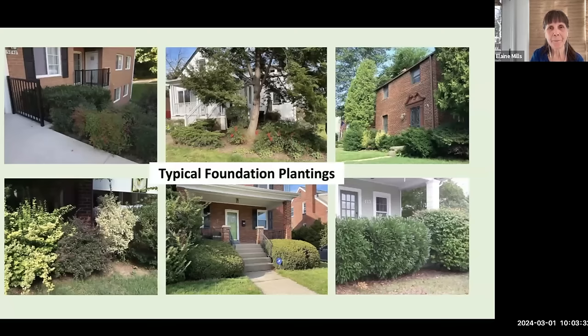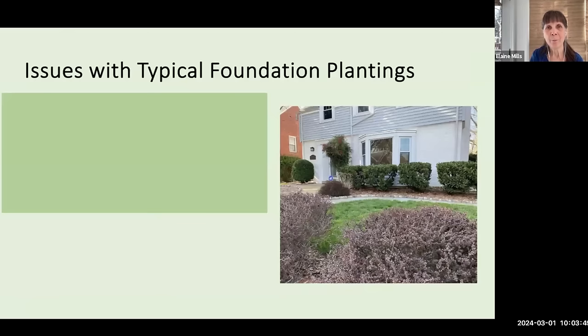Walking around my neighborhood, these are the typical plants I see used as foundation plants: yew, nandina, euonymus, Japanese barberry, azalea, cherry laurel, burning bush. Unfortunately, there are some issues with these typical foundation plantings. First of all, this is a very limited palette of shrub species, and that limited palette doesn't contribute to biodiversity.